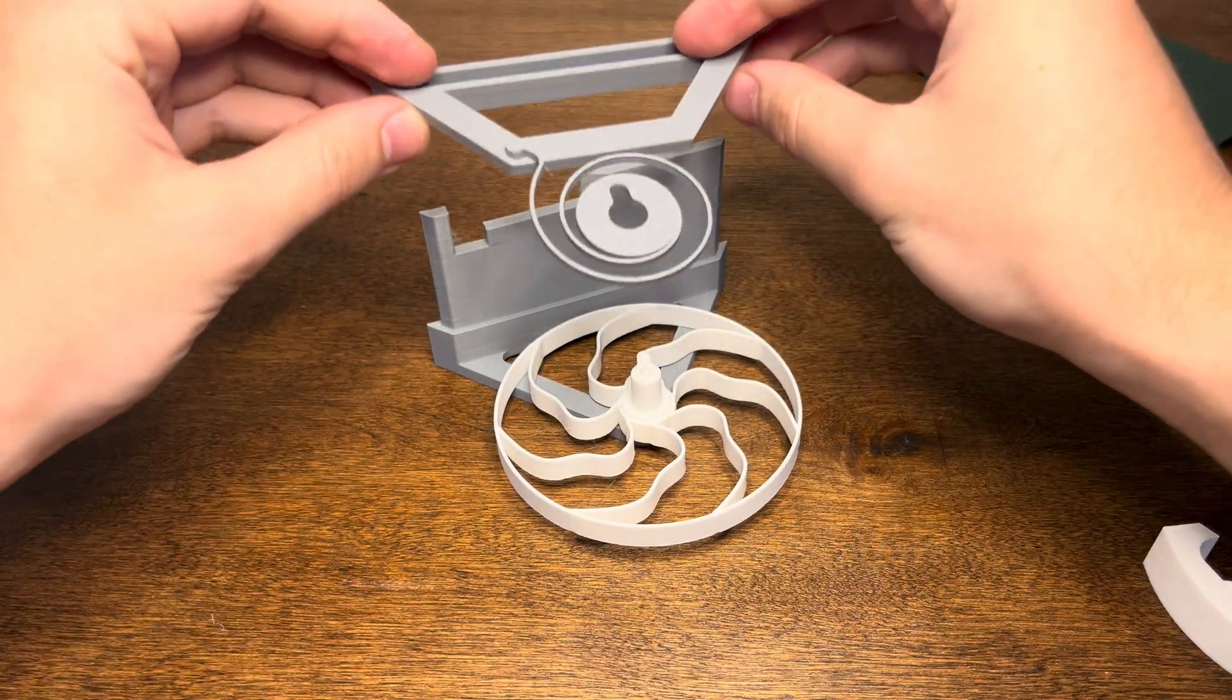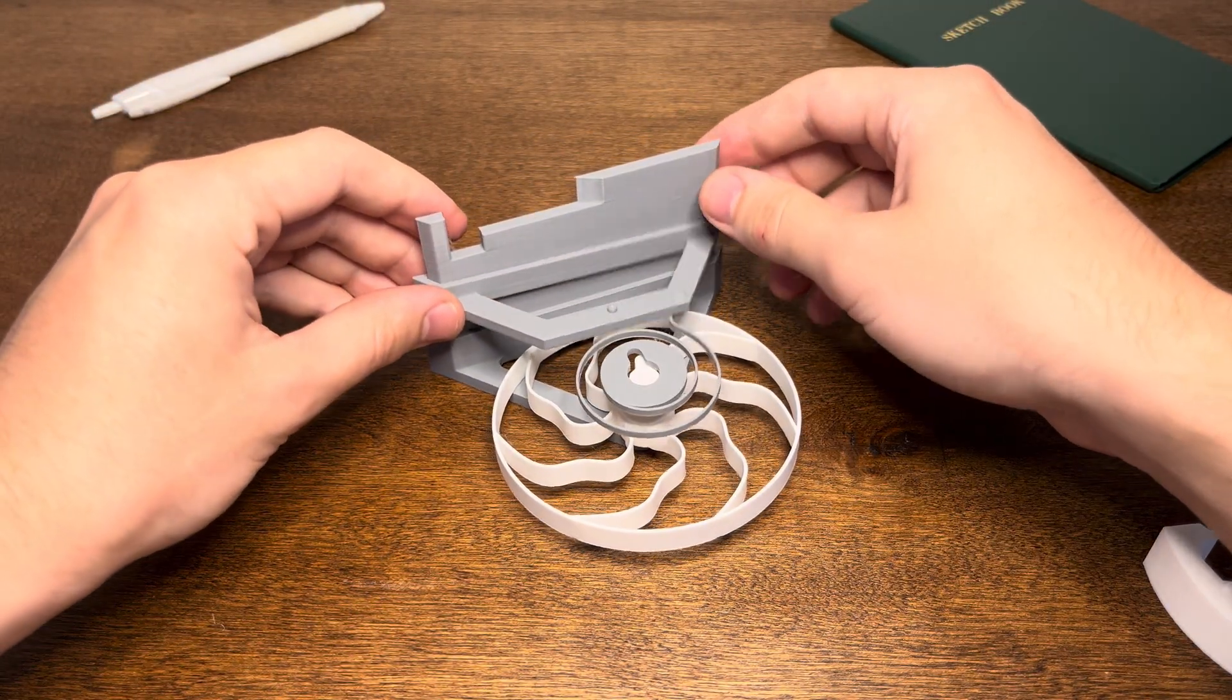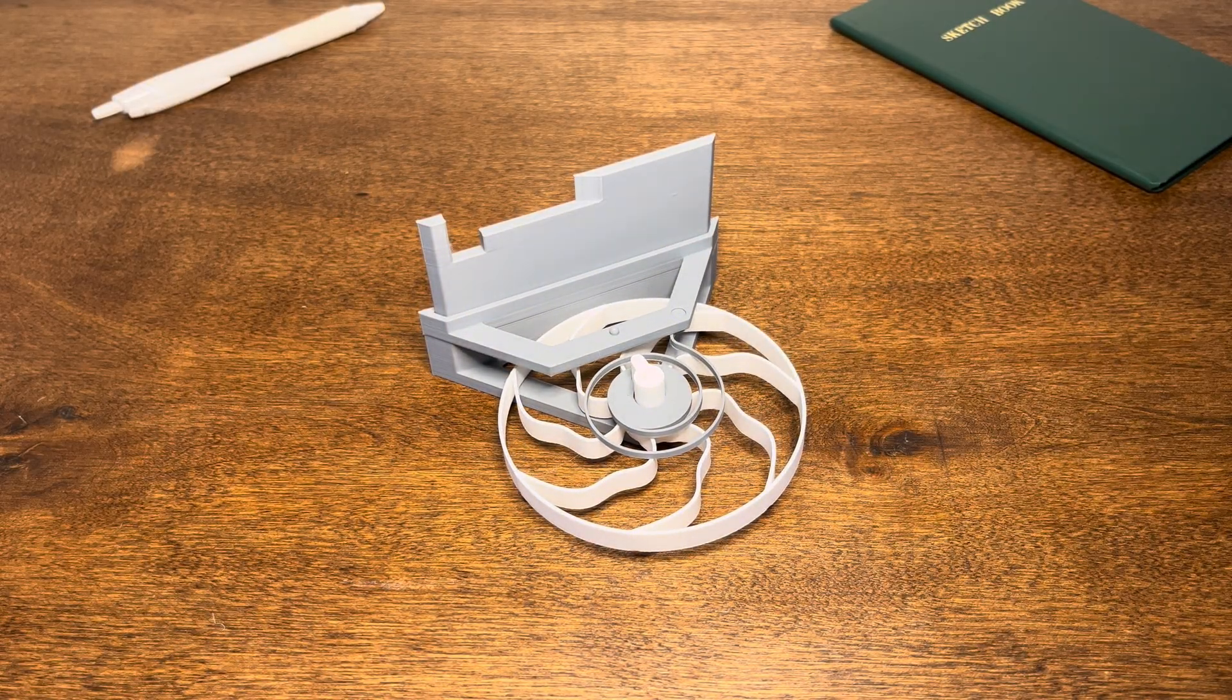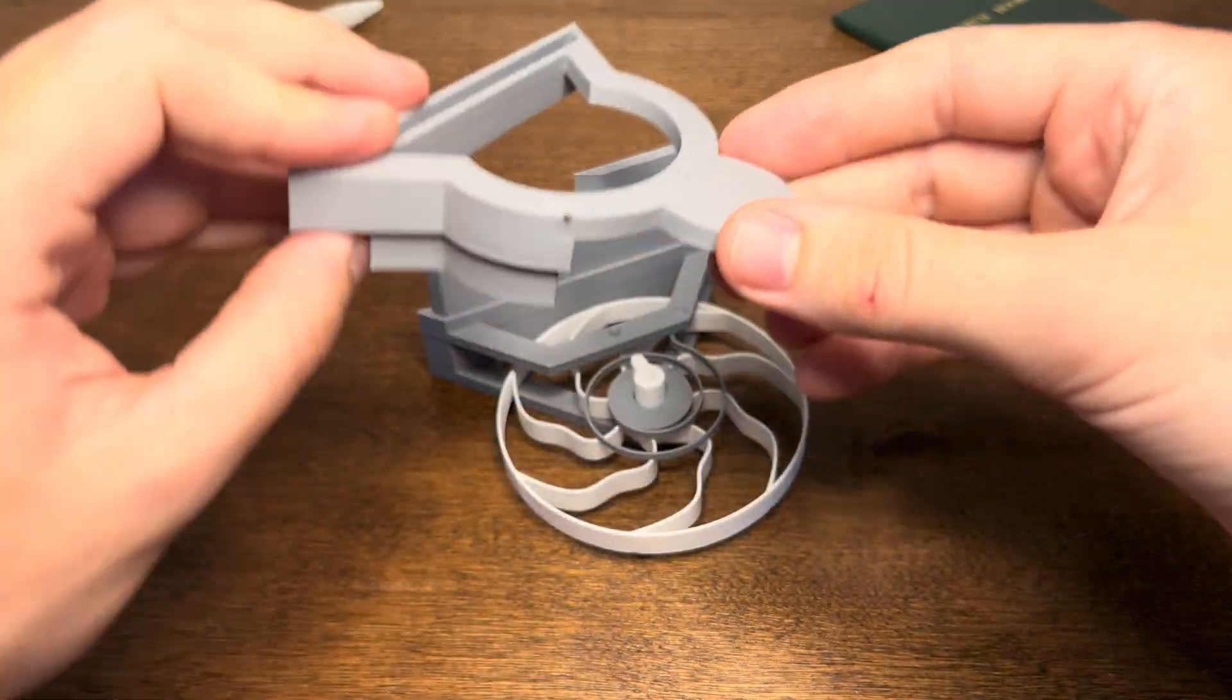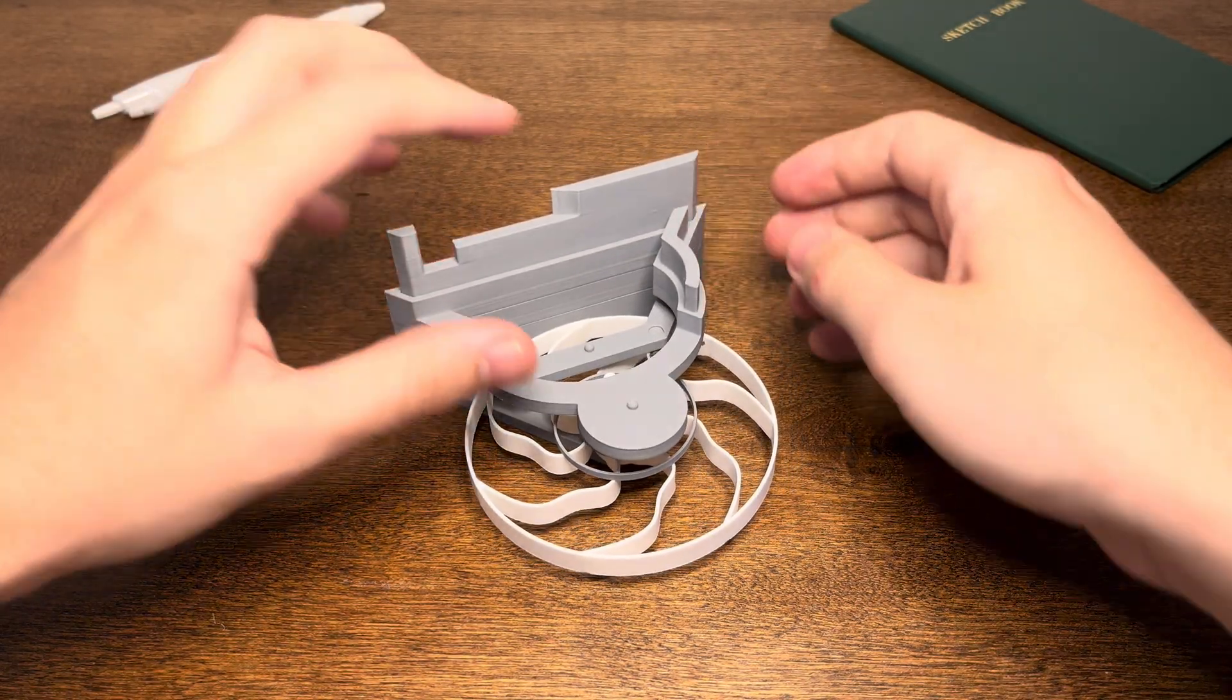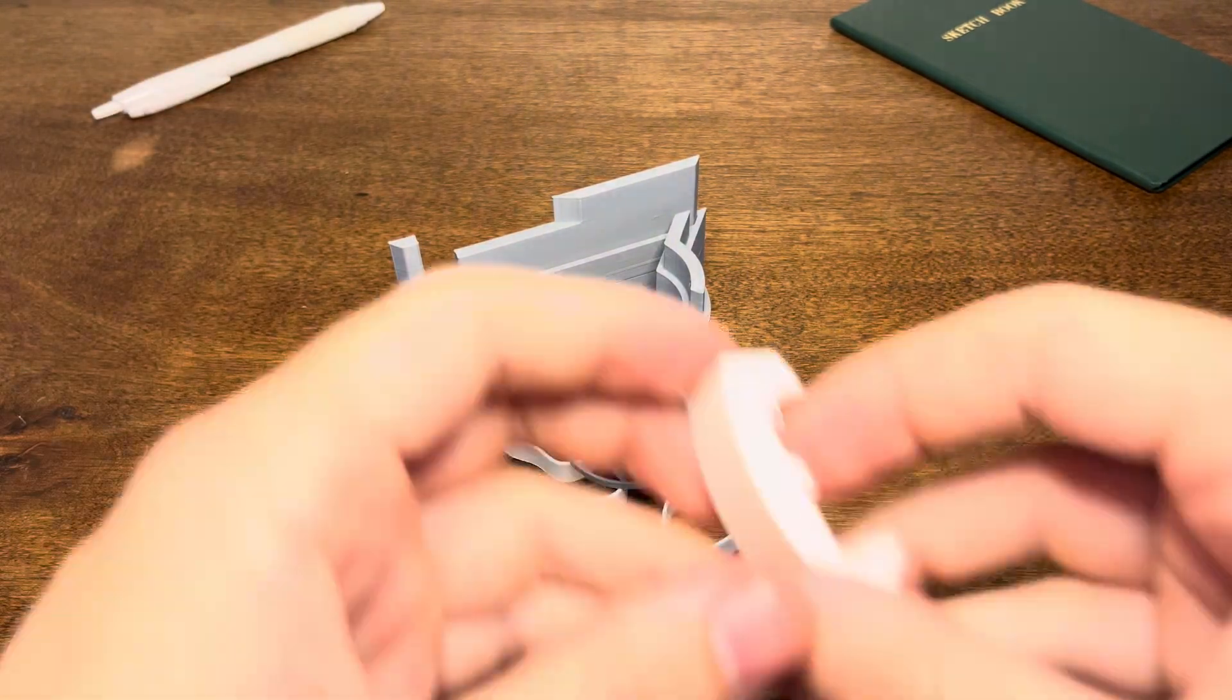So assemble this piece right on to that larger portion and make sure to slot it over the balance wheel. You can see the key feature slots it right over. So this is the next piece. Just slide it on over and you can see the slot where the point of the balance wheel meets with the point of the housing portion. And just do a little test spin just like that. Make sure it goes back and forth.